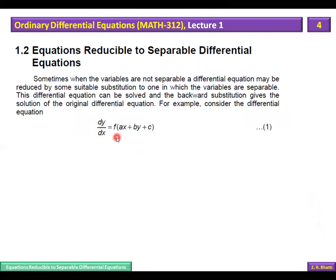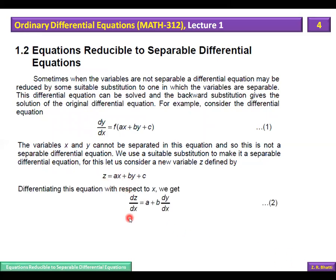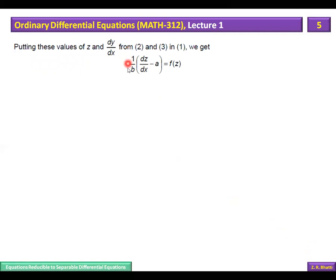Consider the form dy/dx = f(ax + by + c). Here x and y are involved in such a way that variables cannot be separated. So we substitute z = ax + by + c as a new variable. We also need to calculate dy/dx because it appears in the differential equation. Differentiating: dz/dx = a + b(dy/dx), since the derivative of ax is a, of by is b(dy/dx), and of c (constant) is zero. Therefore dy/dx = (dz/dx − a)/b.